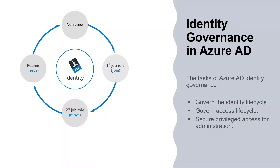Azure AD identity governance gives organizations the ability to govern the identity lifecycle, govern access lifecycle, and secure privileged access for administrators. These actions can be completed for employees, business partners, and vendors, across services and applications, both on premises and in the cloud. It is intended to help organizations address these four key questions: Which users should have access to which resources? What are those users doing with that access? Are there effective organizational controls for managing access? Can auditors verify that the controls are working?